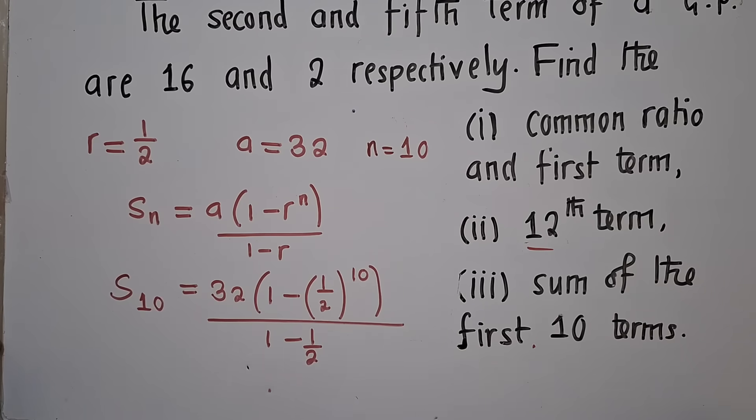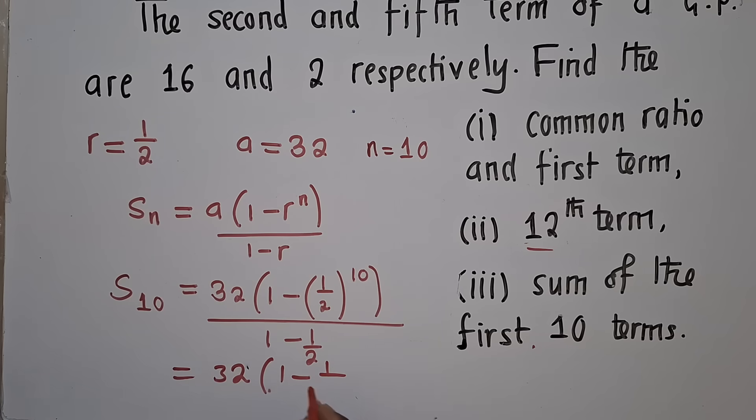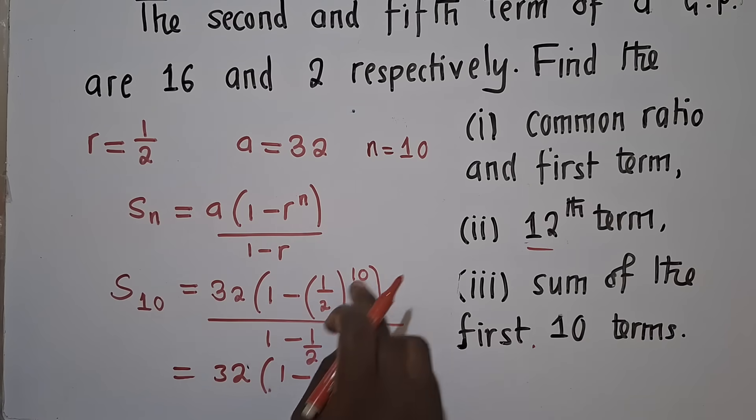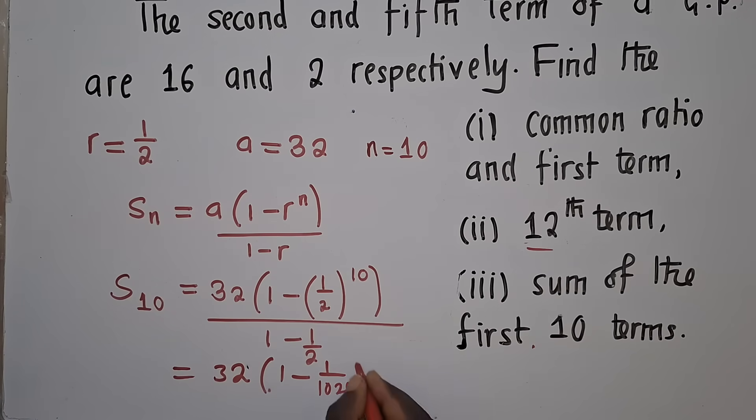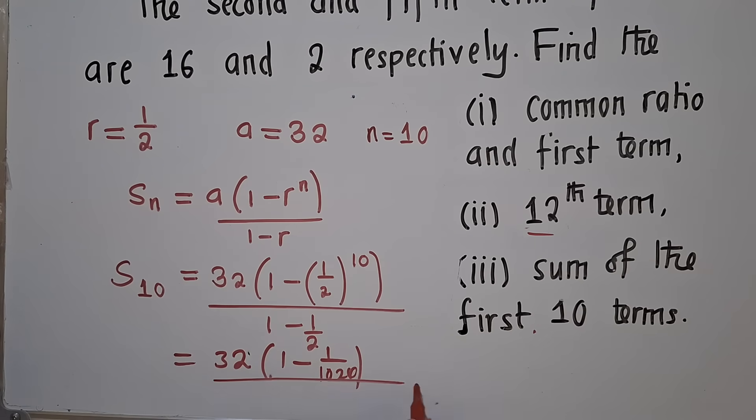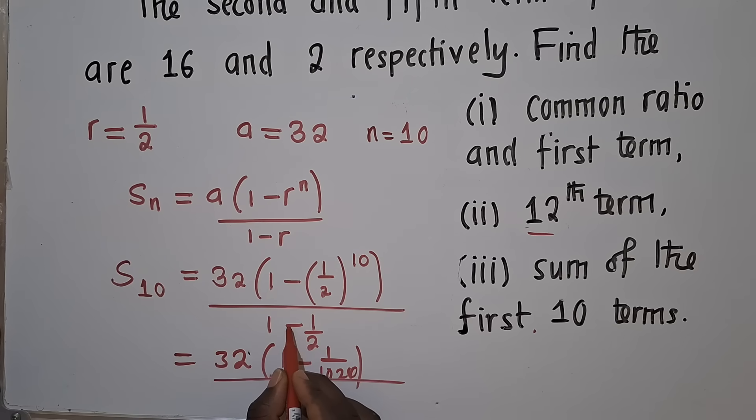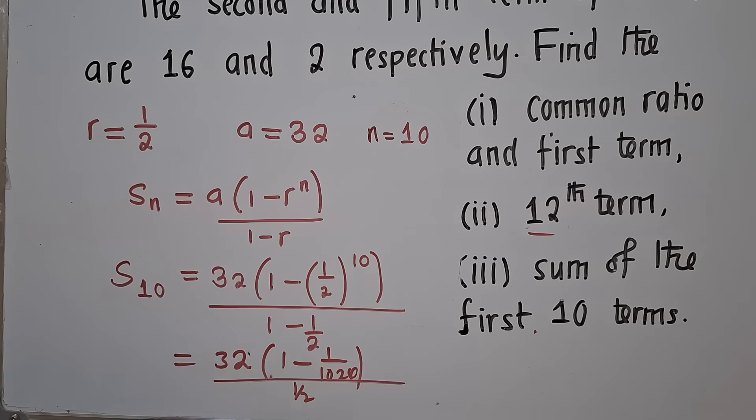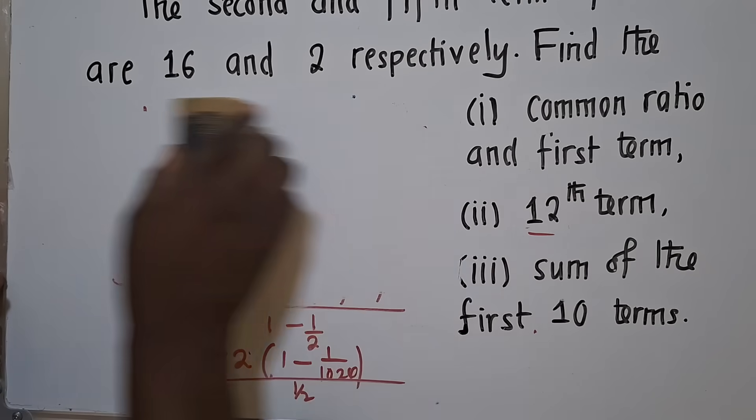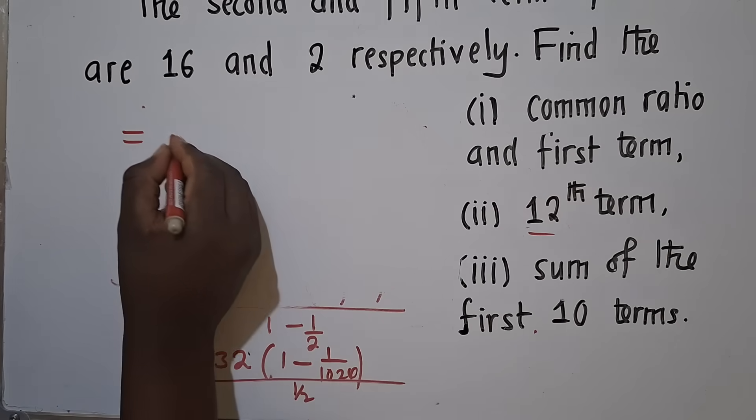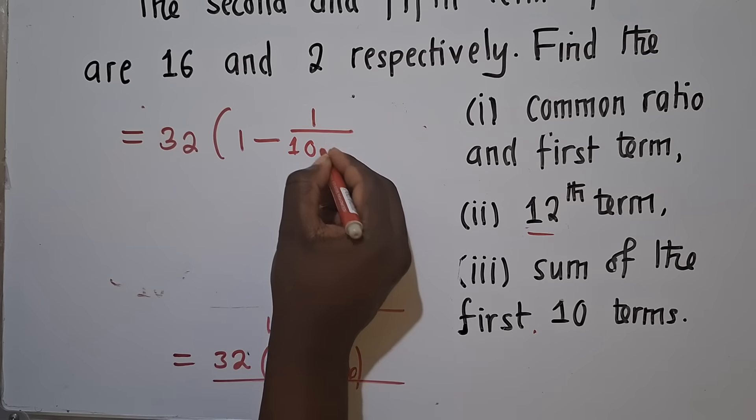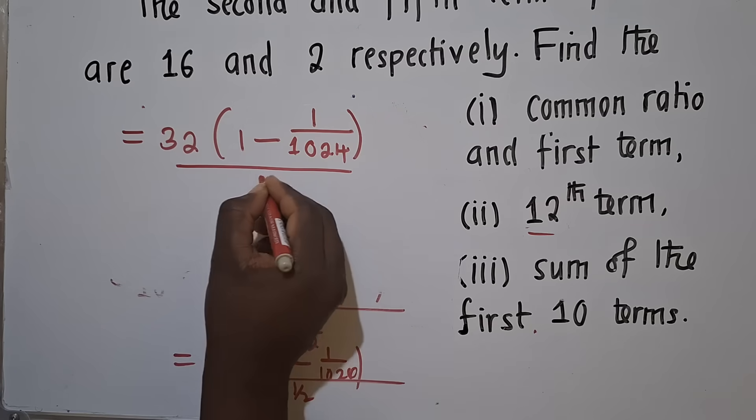We work out things here. Since we're running out of space, let's see if we can get anything or see where we can reach. So here 1 power 10 is 1, 2 power 10 is 1024. Then we write on the denominator 1 minus 1 over 2, that's 1 over 2. So let me just erase. We pick it from here. We're at this stage: 32 times 1 minus 1 over 1024, over 1 over 2.